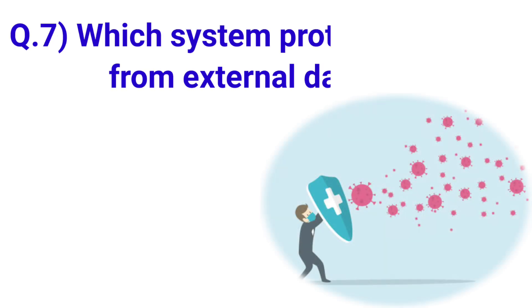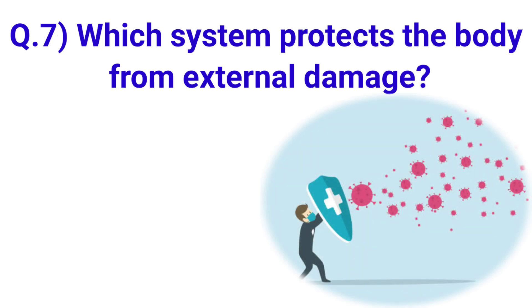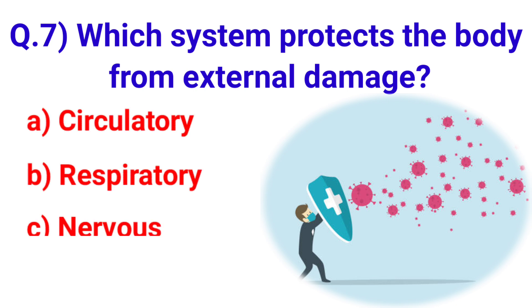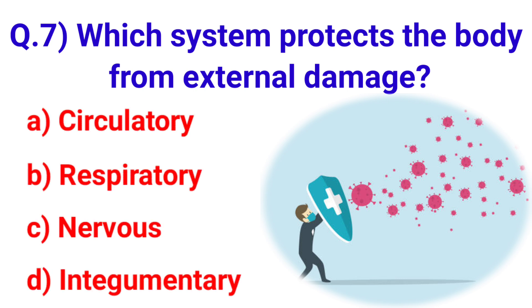Next question: Which system protects the body from external damage? Your options are: A. Circulatory, B. Respiratory, C. Nervous, D. Integumentary.